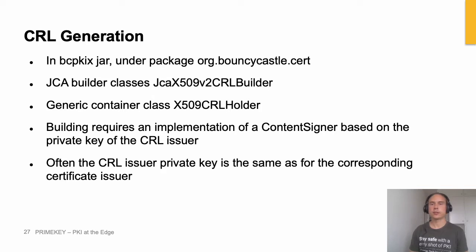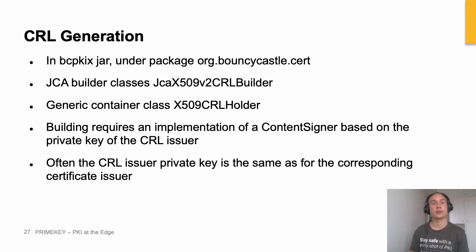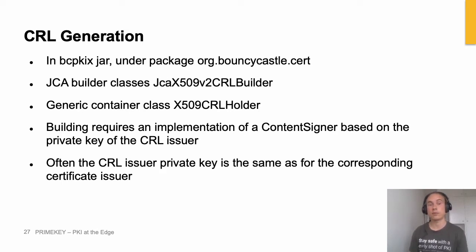For CRL generation it's very similar. You have a builder class, a ContentSigner, and you can parse the CRL using a container class — in this case called X509CRLHolder. One thing to note: the key you load into the ContentSigner is most likely going to be the key of the CA that issues the CRL, but you can have the CRL issued by a dedicated CRL issuer — it doesn't have to be the same key used by the CA. If you're using EJBCA it's always going to be the same key, but if you're using Bouncy Castle you can choose another key.